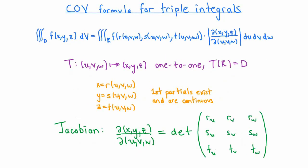There are similar formulas for change of variables in dimensions bigger than two. In three dimensions, if we have a triple integral of f of x, y, z dV, and we make a change of variables x equals r of uvw, y equals s of uvw, and z equals t of uvw, then under suitable hypotheses the integral transforms in a similar way: the integrand changes, the differential changes, and the region of integration changes. To figure out how the differential changes, you compute the Jacobian of a transformation in R3 — exactly analogous to the two-dimensional case. Take the three functions one at a time, compute the partial derivatives of each with respect to each new variable, and then take the determinant of that 3×3 matrix.